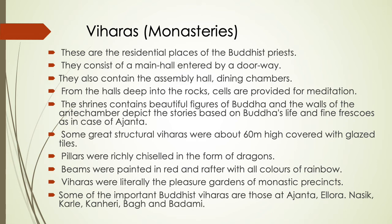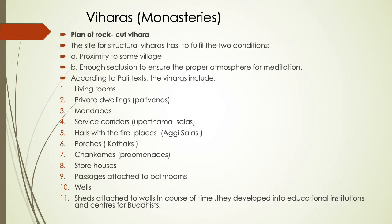There are two types of Buddhism: Hinayana and Mahayana. The three-storied viharas of Elora are very famous and important. The plan of a rock-cut vihara includes a living room, private dwelling, service corridors, halls, porch, storehouses, fireplaces, wells, passages, and other elements. All comforts were available in these monasteries.